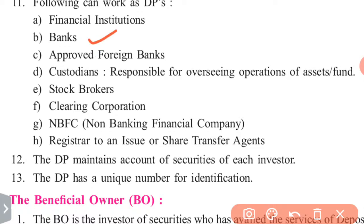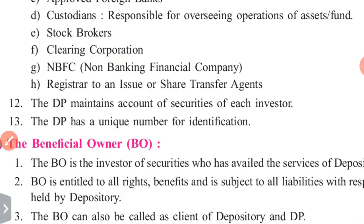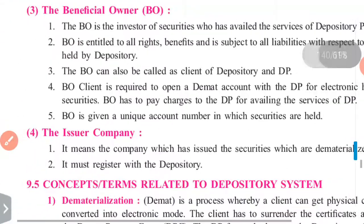Types of depository participants include: financial institutions, approved foreign banks, custodians responsible for overseeing the operation of assets funds, stock brokers, and clearing corporations. These are the entities that work as DPs.